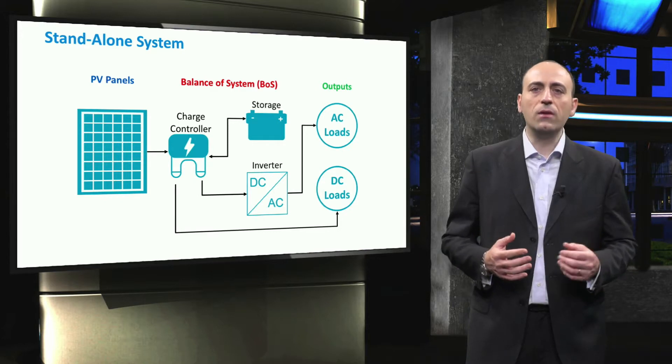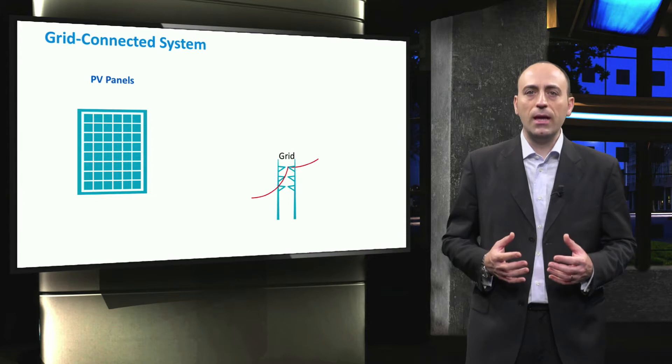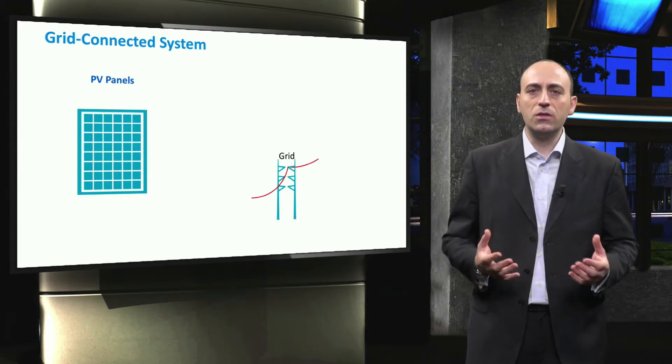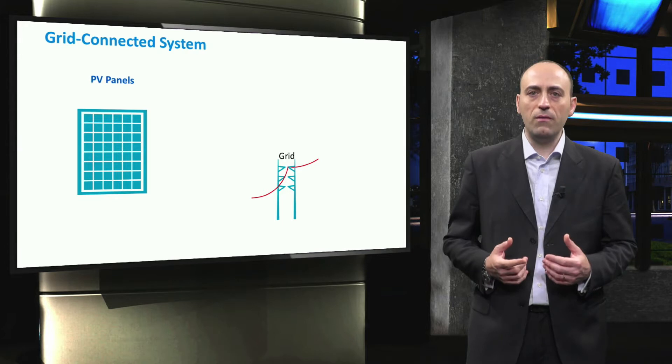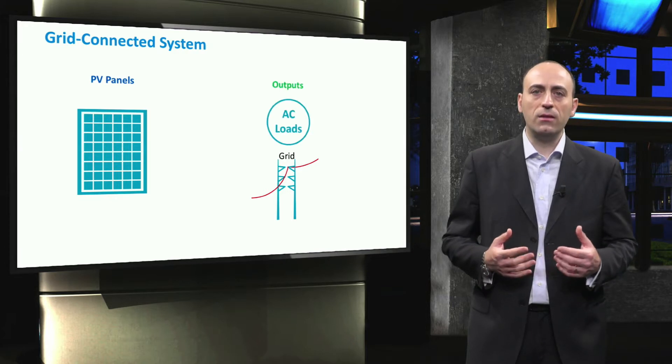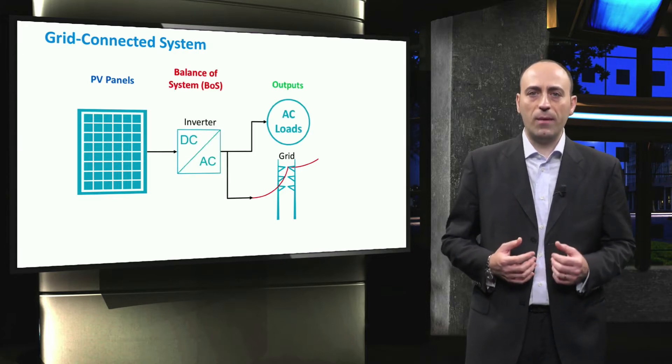On the other hand, grid-connected PV systems have the distribution grid as a backup and are typically installed in buildings. They consist of the PV panels, the AC loads, and the inverter that connects the AC loads and the PV panels. Now, it is time to look at how all the components are designed and brought together to create a complete PV system. We can design a PV system at different levels of complexity.